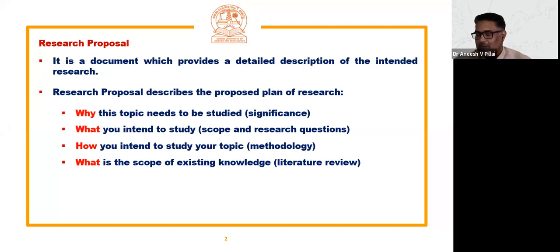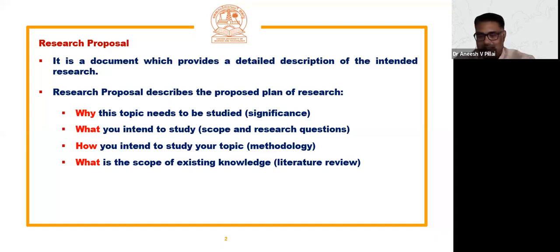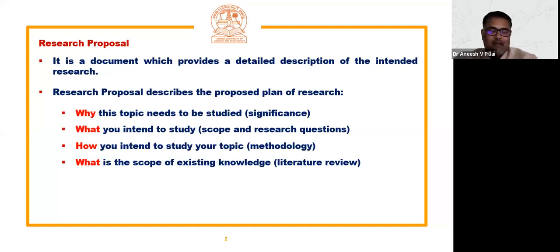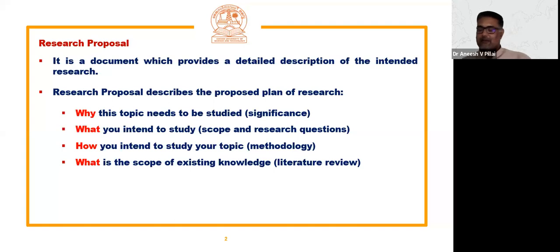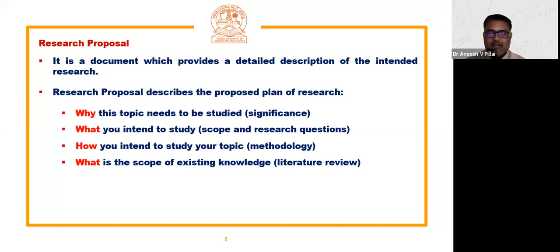When you select a topic, make sure that topic has not been dealt with in detail by any existing literature. You have to identify the relevant literature. There is a misconception that literature review is about making a summary of available literature. In some dissertations and theses, they write the article title and then give a small summary about that article. That is not actually a literature review.